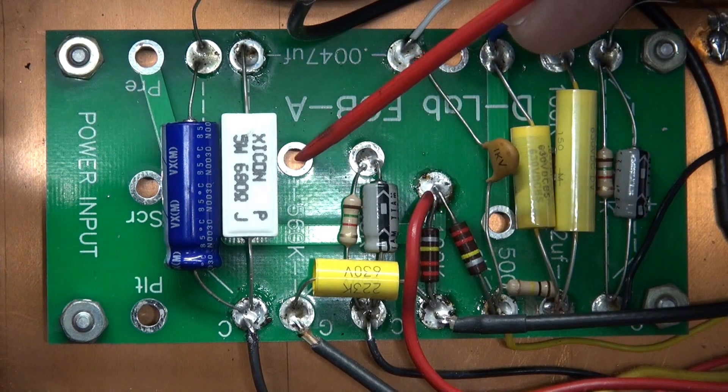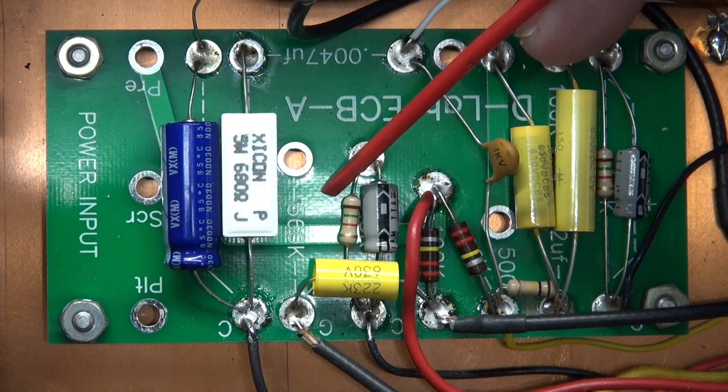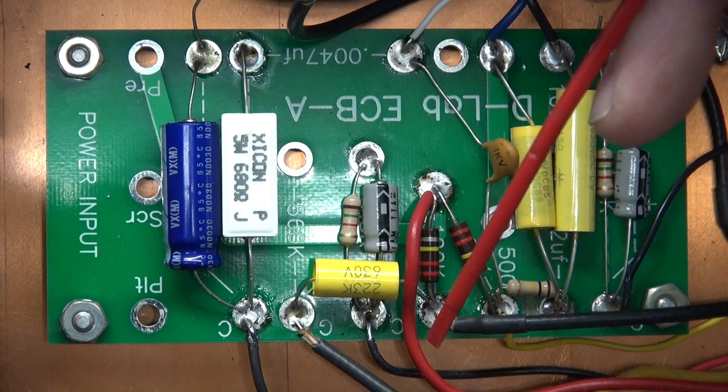There's also a missing 560K resistor here. That's because this is push-pull and those grid leakage resistors are now down on the tube base.